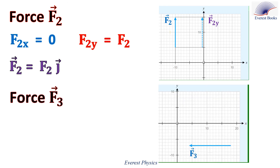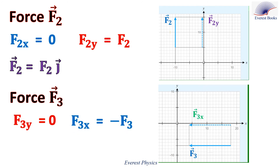Now consider a force F3. As we see, F3 has no component along the y axis, so the y component of F3 equals zero. F3 is oriented along the negative x axis. Then F3x equals minus F3. Therefore, the vector F3 equals minus F3 times i.